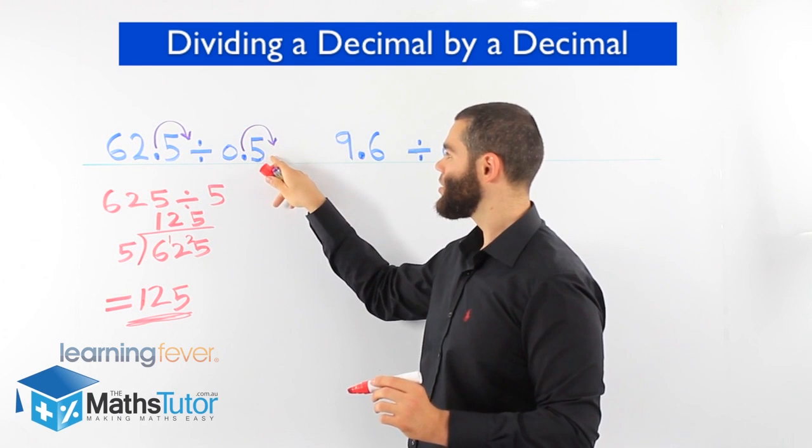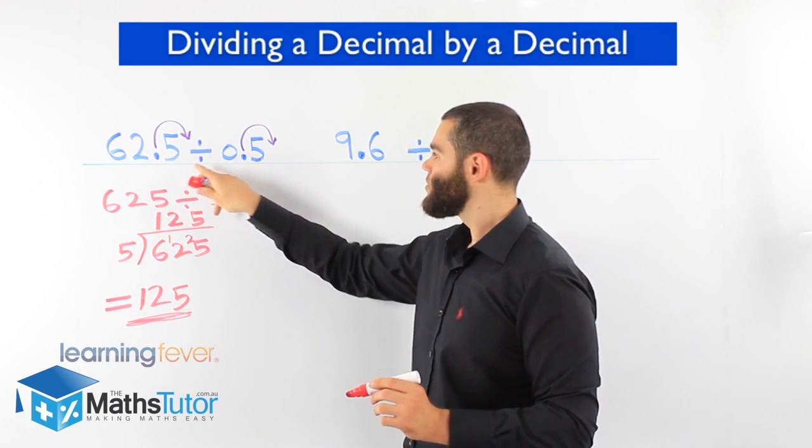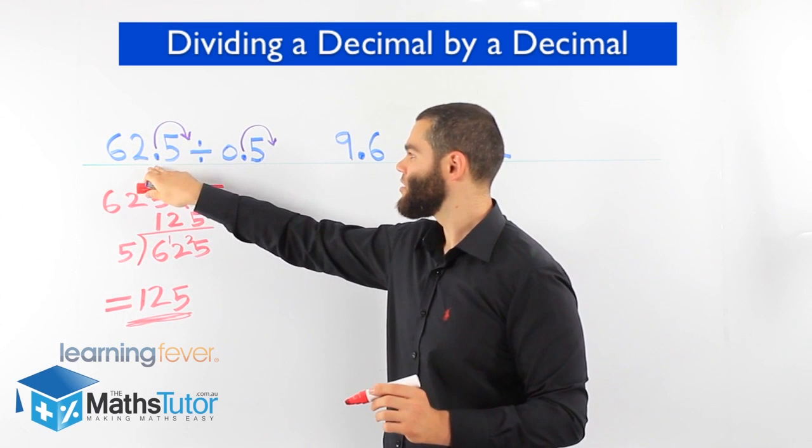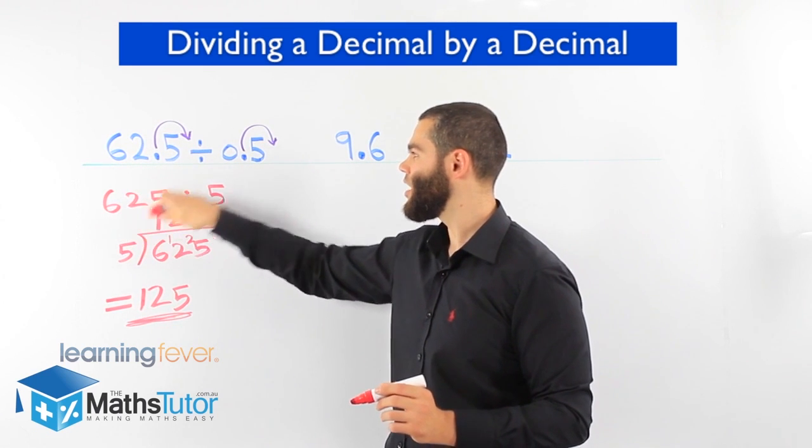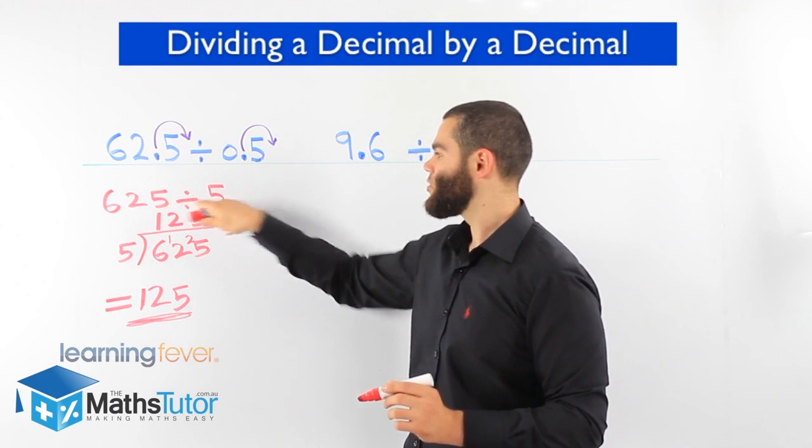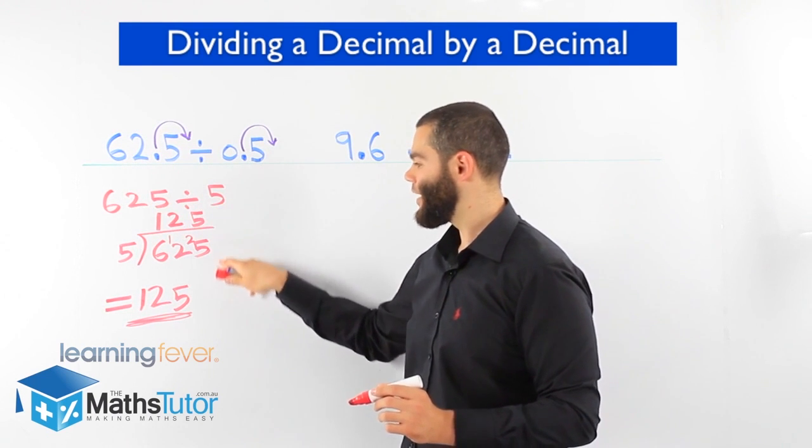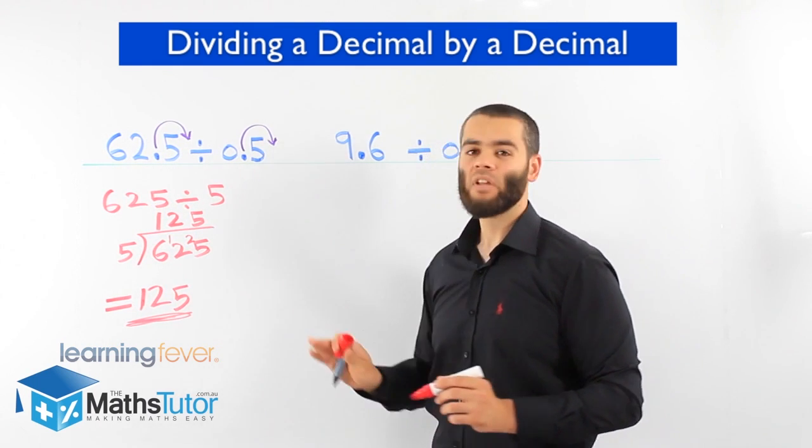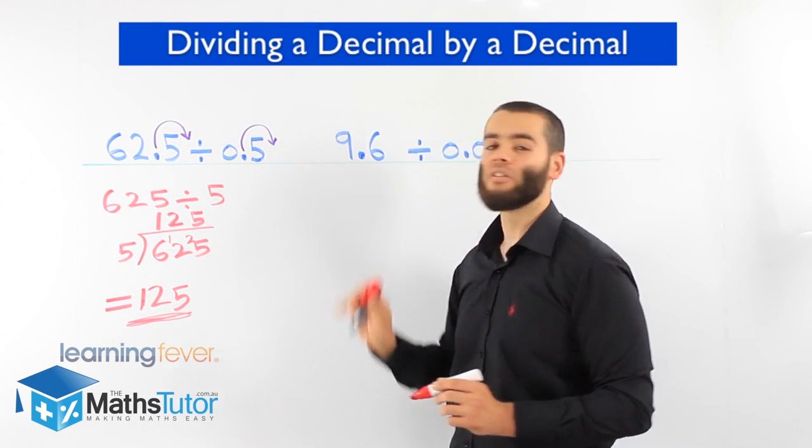We change the decimal into a whole number. So we can now go and divide it. It becomes a whole number. 62.5 becomes 625 divided by 0.5 becomes 5. 625 divided by 5. And there's our answer. So it's like a little cheat to get away and work out a question like that.